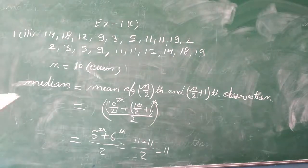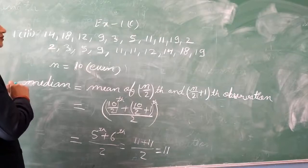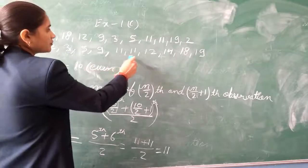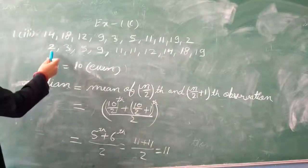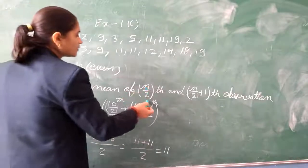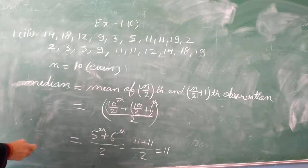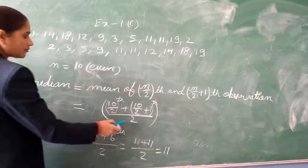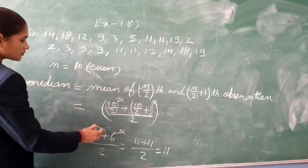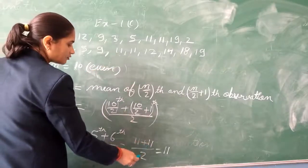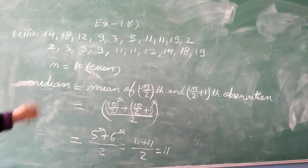Question number 1, 3rd part. These are the observations — counting: 1, 2, 3, 4, 5, 6, 7, 8, 9, 10 — there are 10, which means even. We use the formula: mean of n/2 and (n/2 + 1) observations. With n=10, that is the 5th and 6th terms. The 5th observation is 11 and the 6th is also 11. So 11 plus 11 divided by 2 equals 11. This is the required median for the 3rd part.